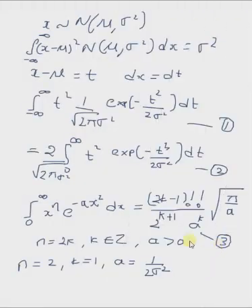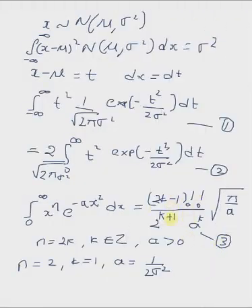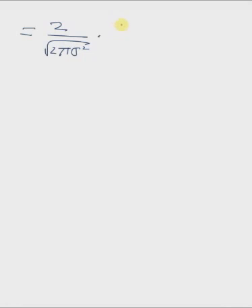follows: it equals 2/√(2π·σ²). Since the value on the right-hand side of equation 3 is (2k-1) and k equals 1, the numerator is 1 factorial, which is 1 factorial divided by 2^(k+1), that